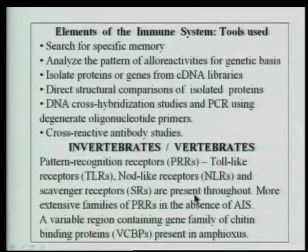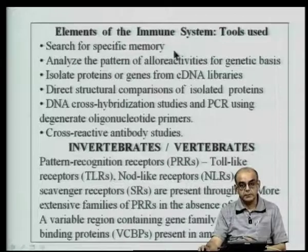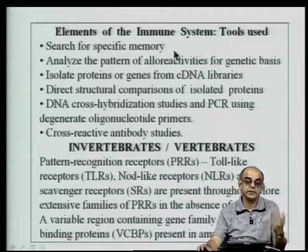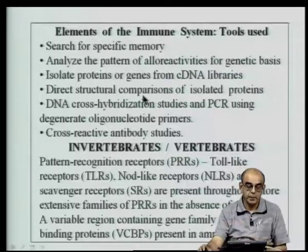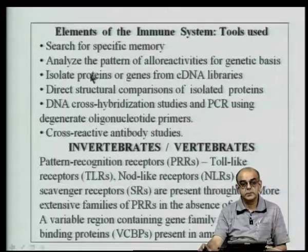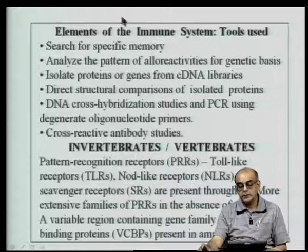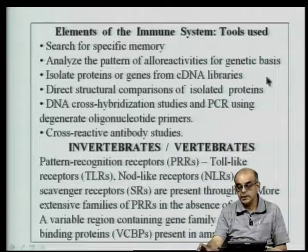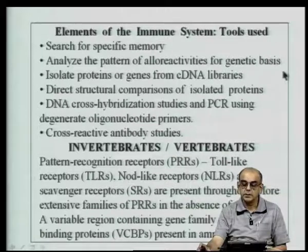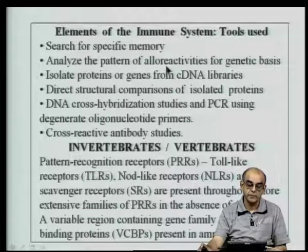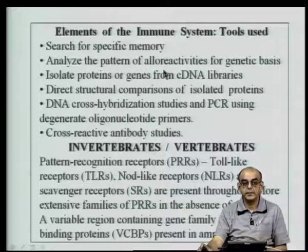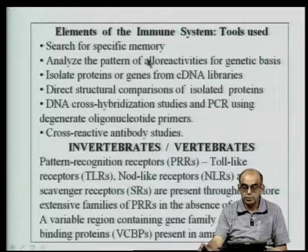When looking at the immune system in evolution, one searches for specific memory — whether memory is present or absent and in what organisms — because that is the hallmark of a very efficient adaptive immune system. Then you analyze the pattern of alloreactivities for genetic bases. The MHC was discovered because there was a genetic basis to graft rejection reactions. In primitive organisms like sponges, graft rejection is found, but those mechanisms need not be centered around molecules with a genetic basis.